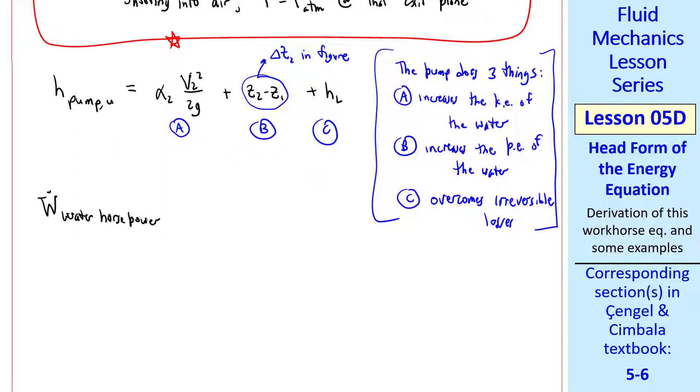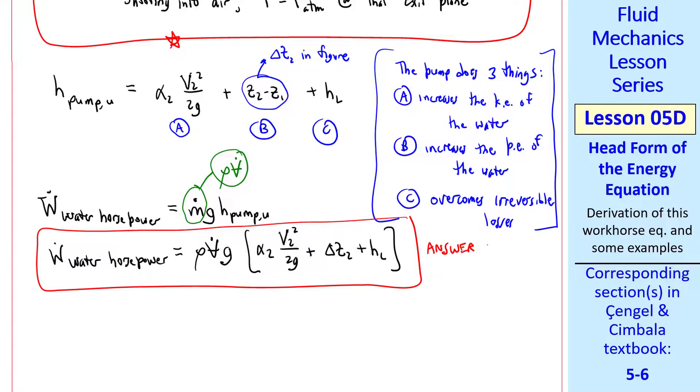The pump has to deliver useful power to the fluid to account for all three of these terms. In terms of water horsepower, we simply multiply H pump U by M dot G and recognize that M dot is rho V dot since we were given a volume flow rate in this problem. So the water horsepower is rho V dot G times these three terms, which is H pump U. So this is our answer to part B in variable form. I can't emphasize enough how important it is to do all your work in variables before plugging in any numbers as far as you can. This will save you a lot of headaches in life.